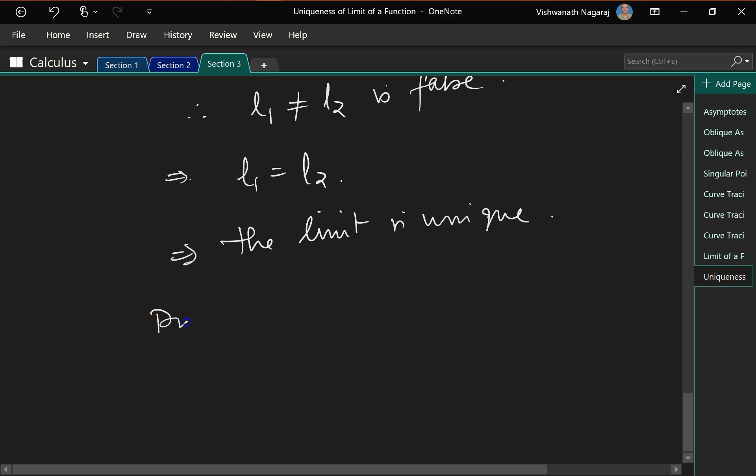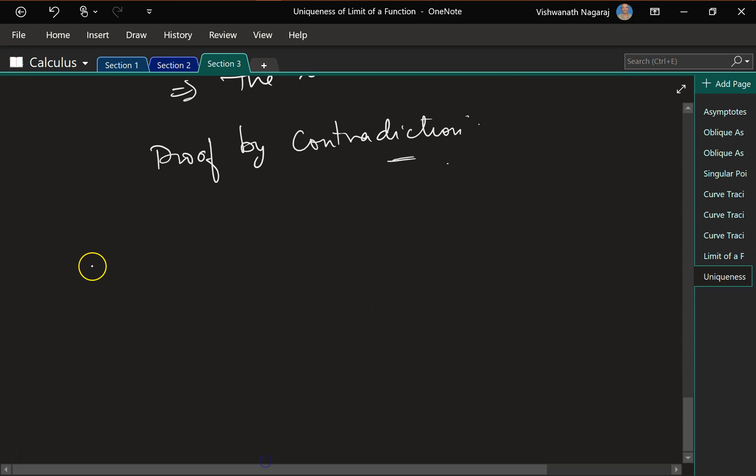So this is called proof by contradiction. We start with an assumption and we end up with a contradiction to prove that our assumption was wrong. Okay. Anyhow, think that's enough. Bye for now.